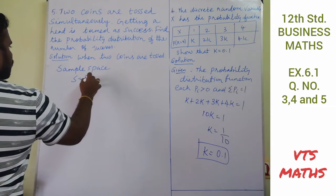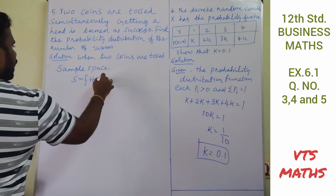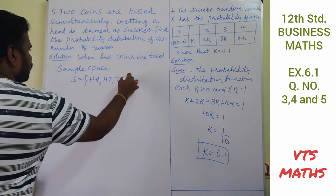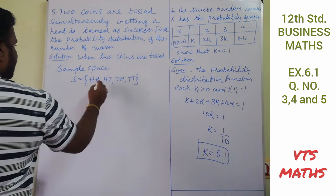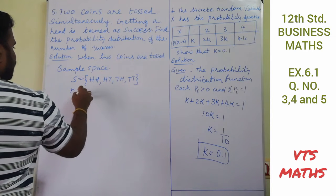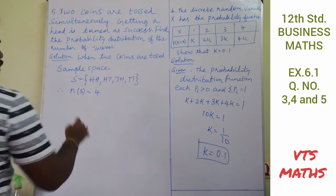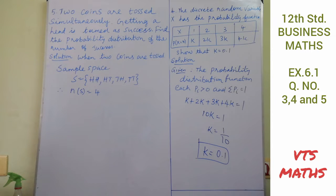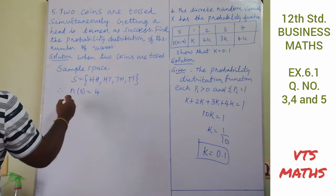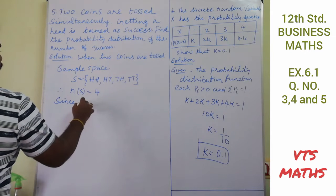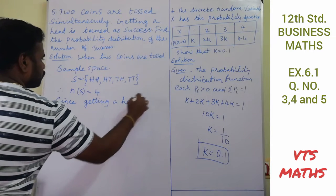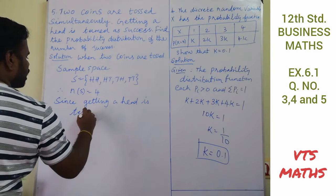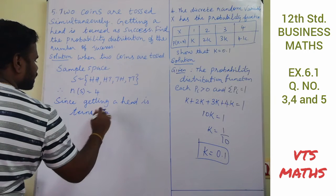For Question No. 5, when two coins are tossed, the sample space is S = {HH, HT, TH, TT}, so n(S) = 4. Getting a head is defined as success.